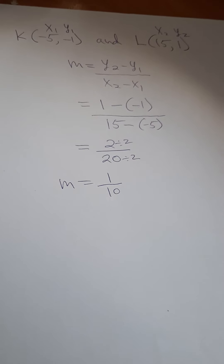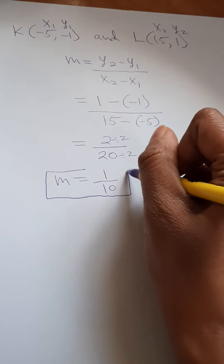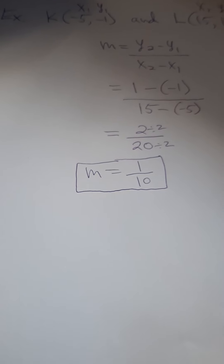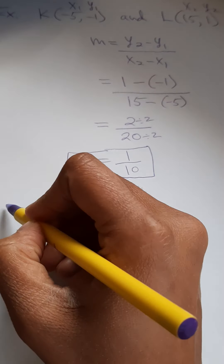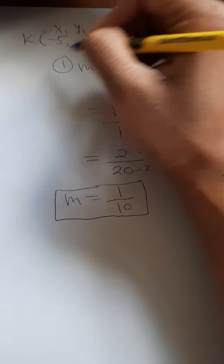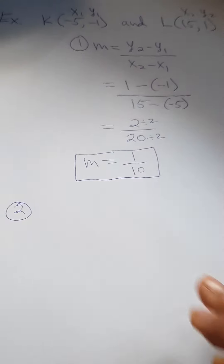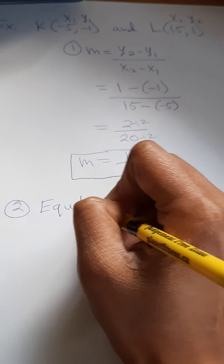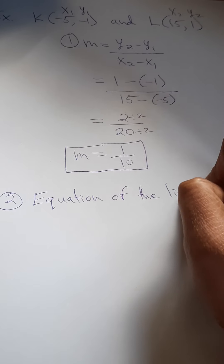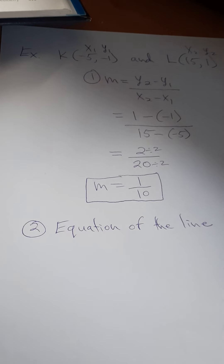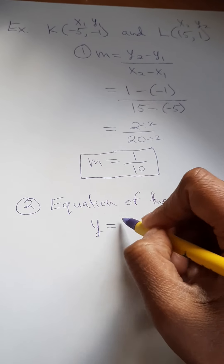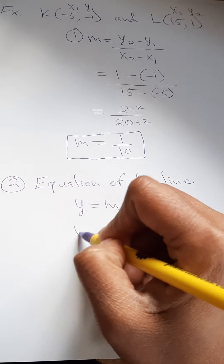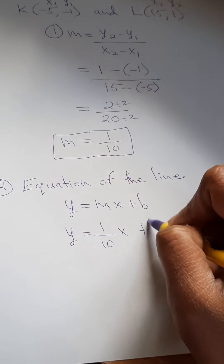This question asks us to find the equation of the line. Step 1 was finding the slope. For step 2, we're looking for the equation of the line. We put it into y equals mx plus b. I notice this is my m value, so I'm going to plug it in: y equals 1 over 10 times x plus b.